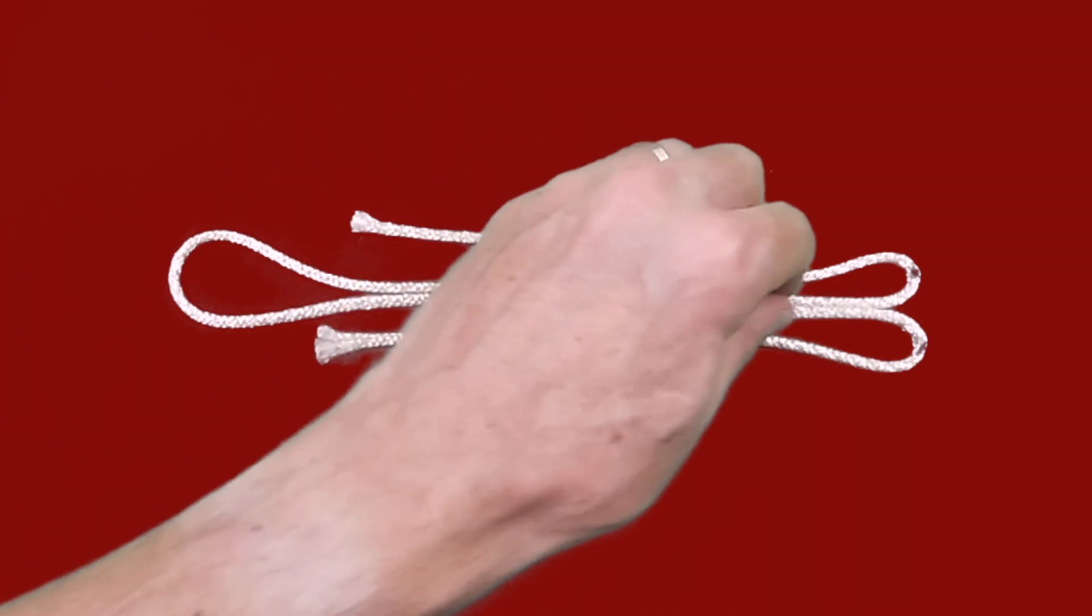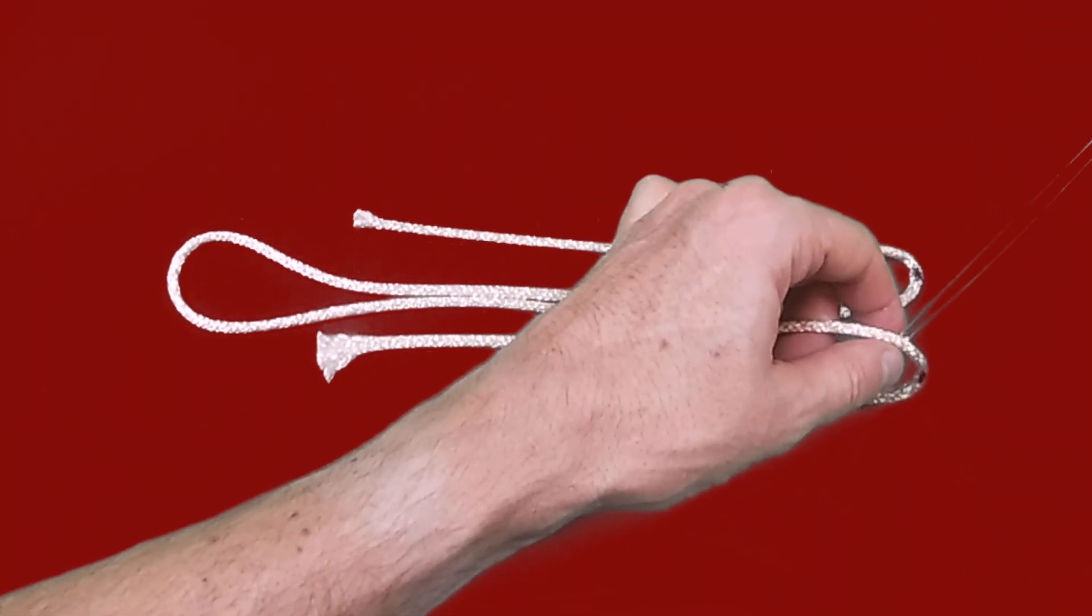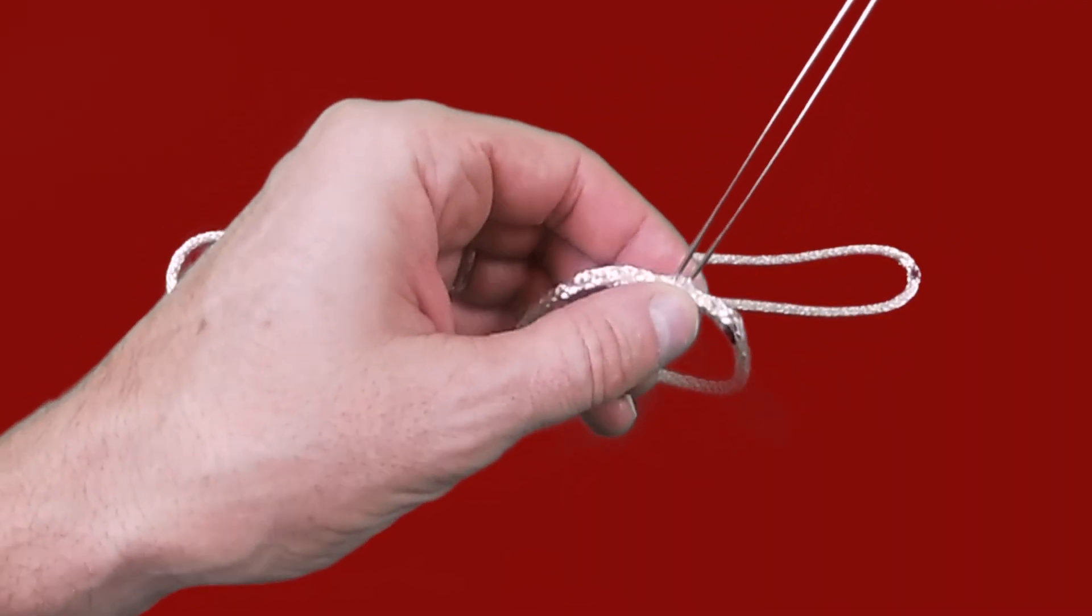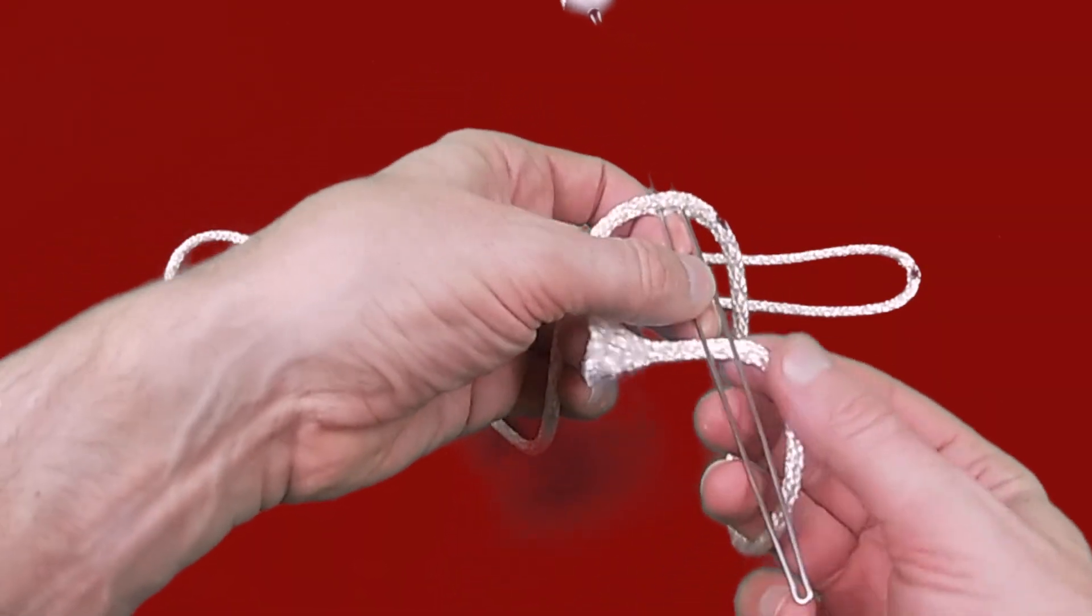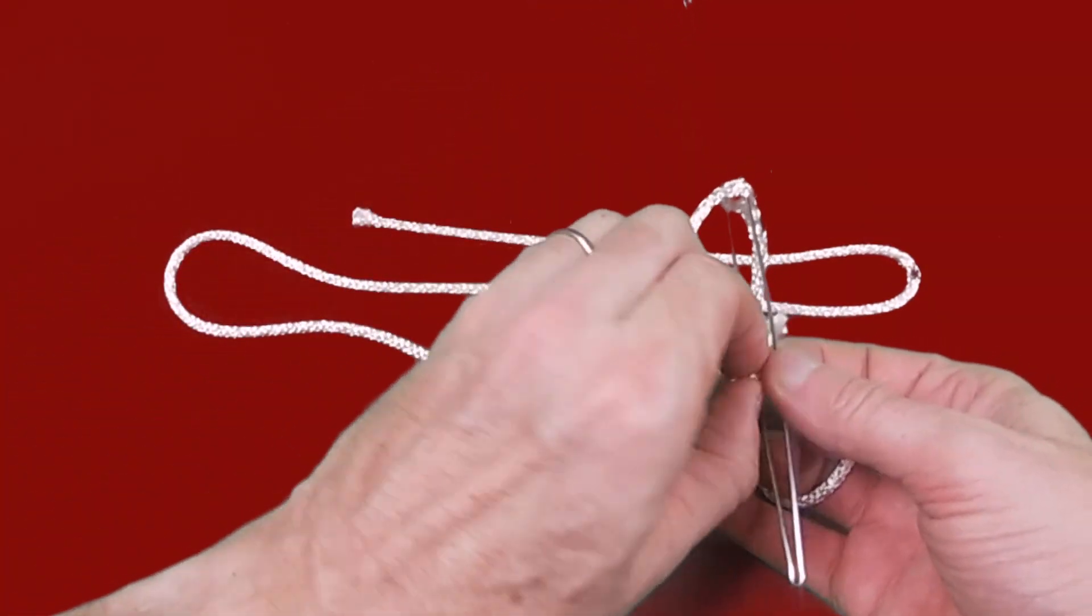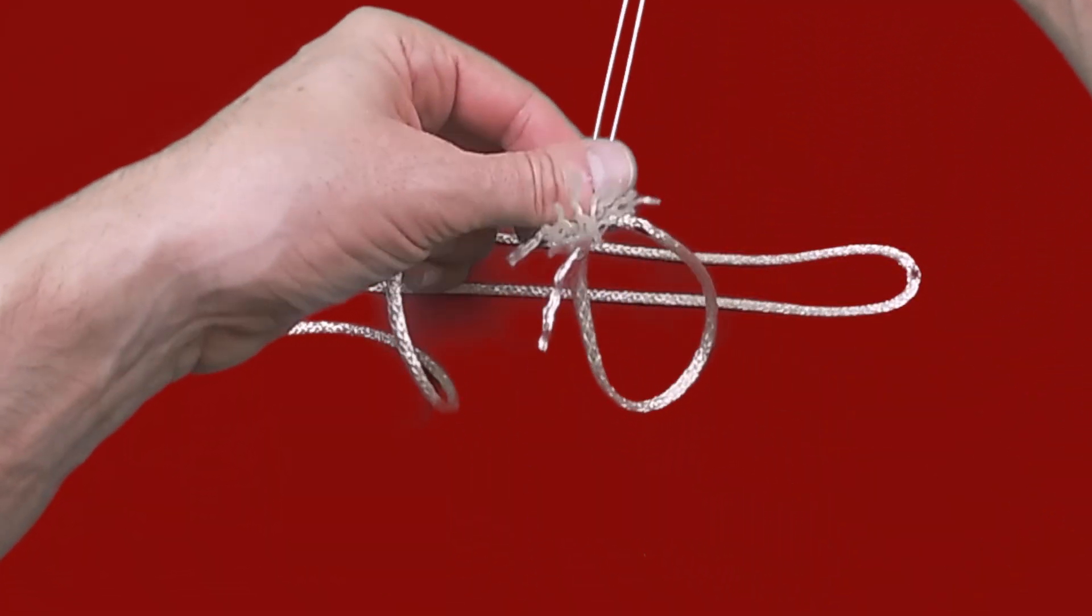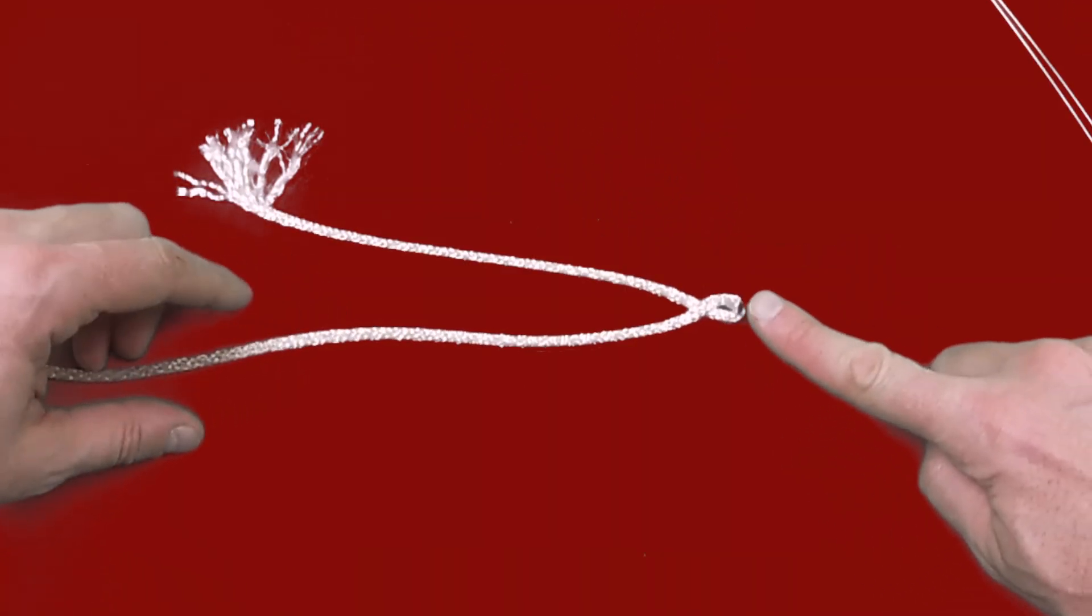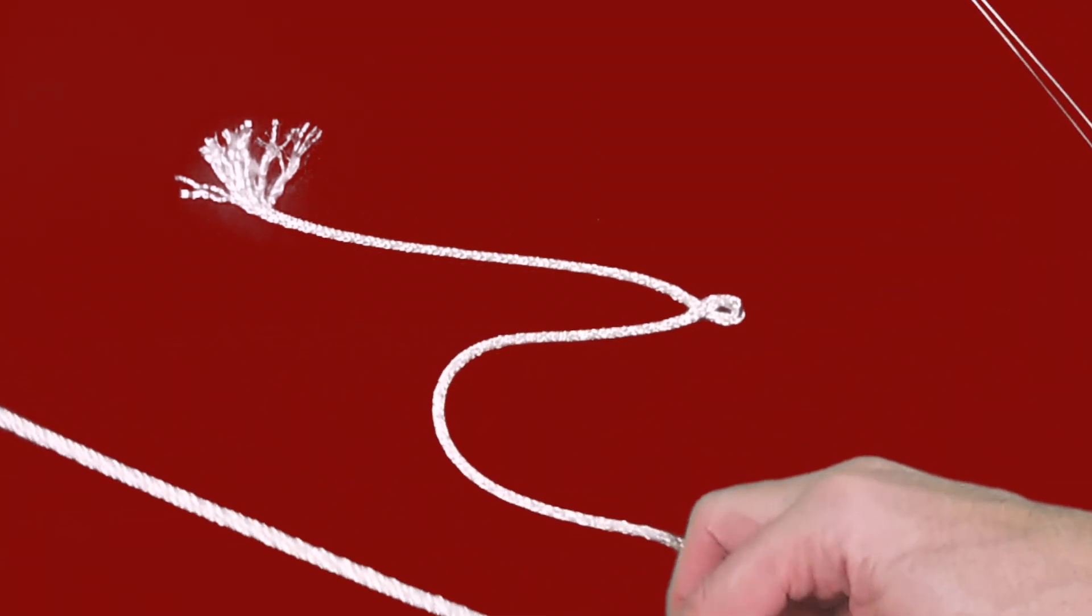To make your first brummel you want to put your D splicer through about 2 rope diameters from your mark, pulling the tail through the main line. You want to end up with a fairly small loop at the top of your brummel splice, just enough for 4 strands of the rope to go through.